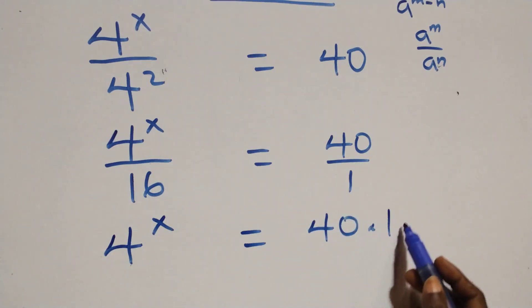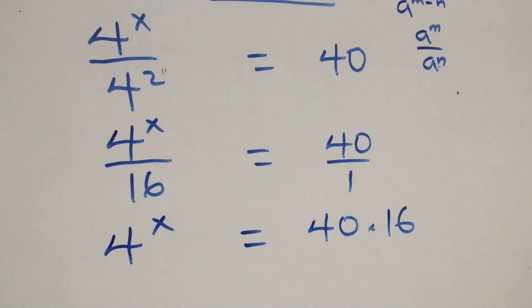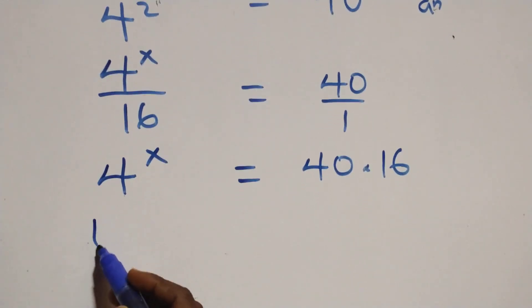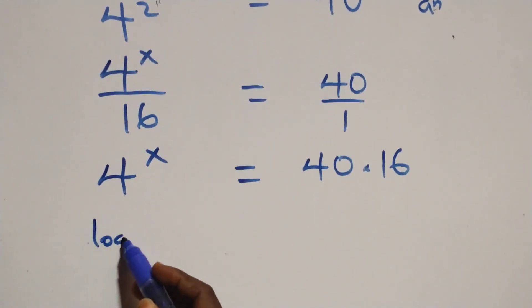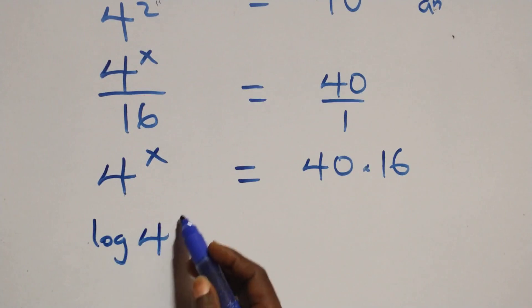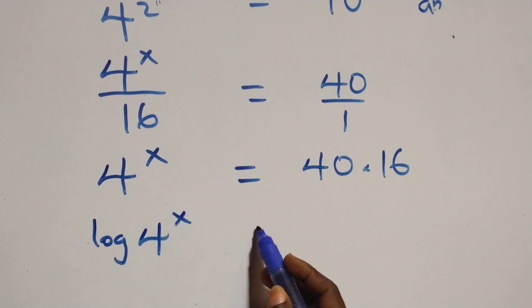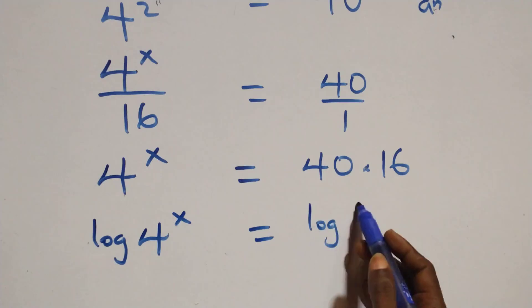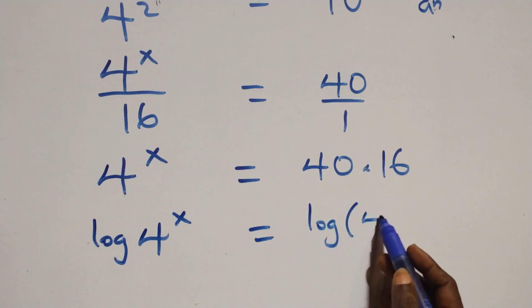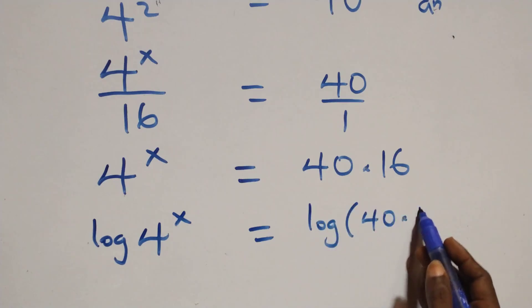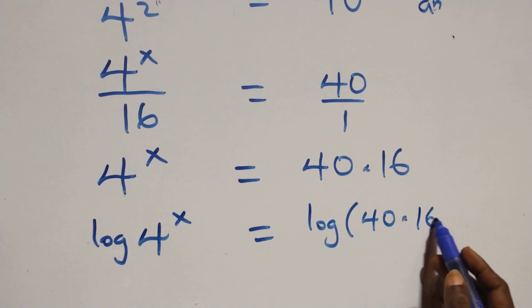The next step here, we take the log on both sides. We have log of 4 raised to power x equals to log of 40 times 16.